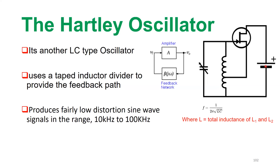In the case of a Hartley oscillator, which is a harmonic type oscillator, the frequency of oscillation is determined by the values of L and C, given by the formula: f = 1 / (2π√LC), where L is the total inductance of L1 and L2 if two inductors are used in series.